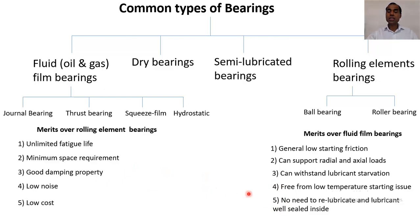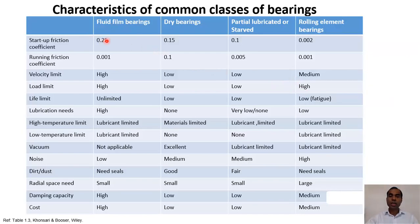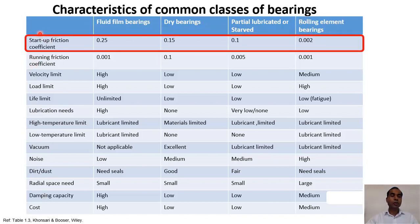These are the advantages and disadvantages of fluid film bearings and rolling element bearings, which make up the major proportion of bearings. We now have a comparison table for all four bearing types across different parameters. For start-up friction coefficient, fluid film bearings generally give high friction of about 0.25 due to boundary lubrication, while rolling element bearings give a very low coefficient of 0.002.